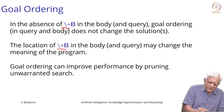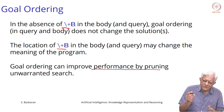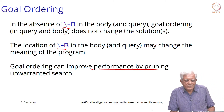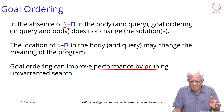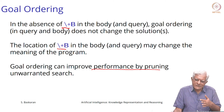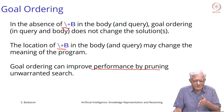Goal ordering can also improve performance by enabling pruned search. We saw the example of the American cousin: checking whether somebody is a cousin first and then whether that person is American is much more efficient than first checking whether somebody is American and then whether that person is a cousin.